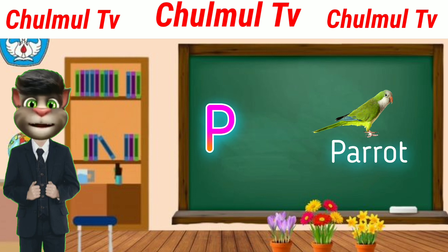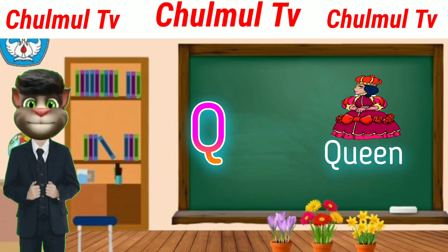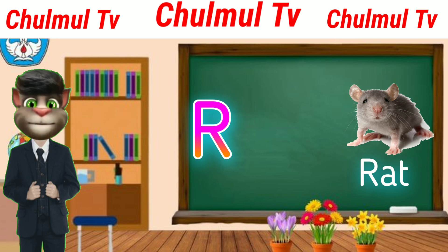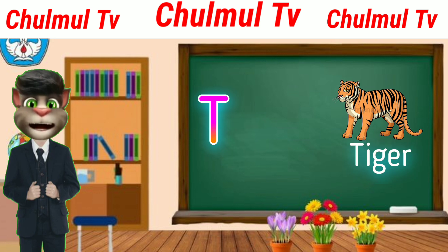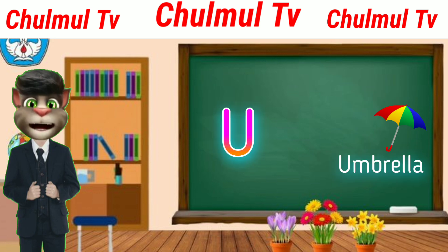P for parrot, Q for queen, O for red, S for sun, D for tiger.